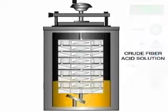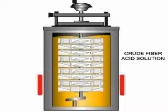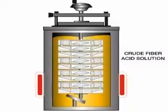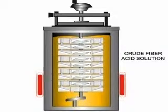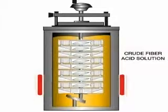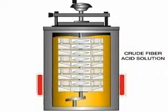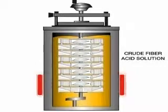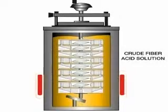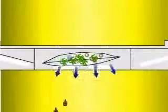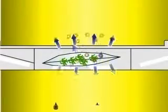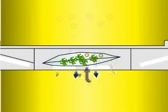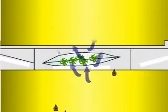The A2000 automatically inserts the needed solution, solubilizes the non-fiber components, and filters the samples. Cell contents are removed while recovering the fiber components being measured.